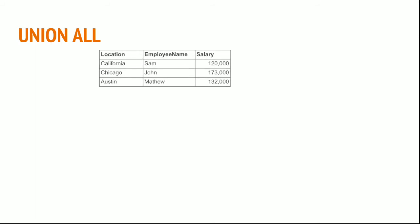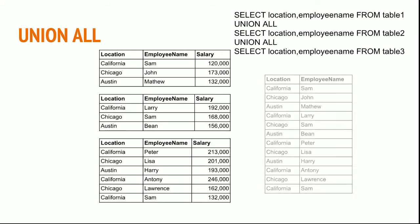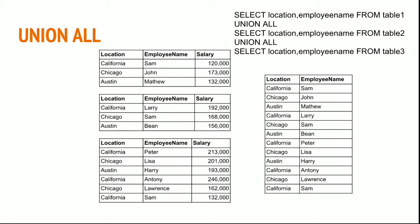Union All is similar to UNION — it will append data from multiple tables and return the result, but it won't check for duplicates. You can see the record California Sam appearing as both the first and last record in the result. If you are sure that you have unique values in all the tables, I would recommend using UNION ALL because it won't check for duplicates and is faster compared to UNION in that situation.